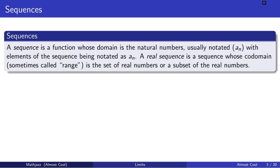A sequence is a function whose domain is the natural numbers. It's usually notated a sub n with parentheses around it. The elements of a sequence are usually notated as a sub n with no parentheses. With parentheses, the symbols are talking about the list itself, and with no parentheses it's talking about a particular item on the list. So a sub n in parentheses means the list itself, and without parentheses a sub n refers to the nth item on the list.